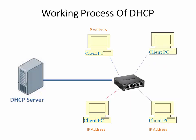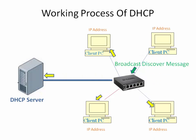When a new client is added to the network, it will broadcast a Discover message to the DHCP server with port number 67 and its MAC address. The DHCP server listening on port 67 will then accept the Discover message and offer an IP address.